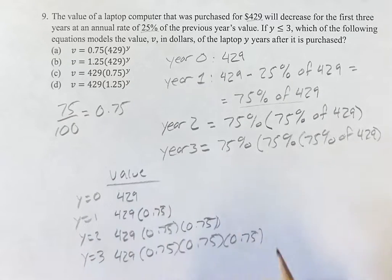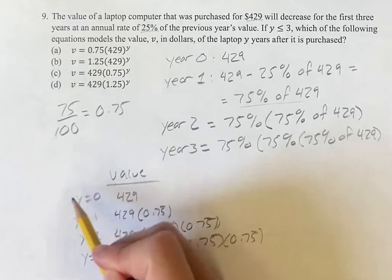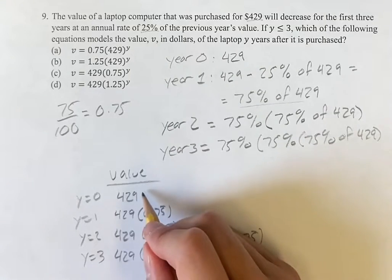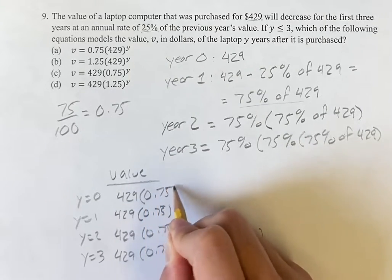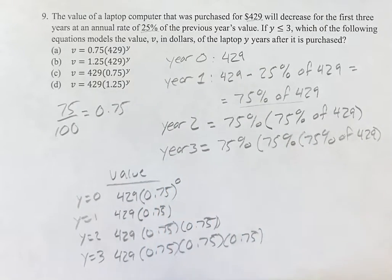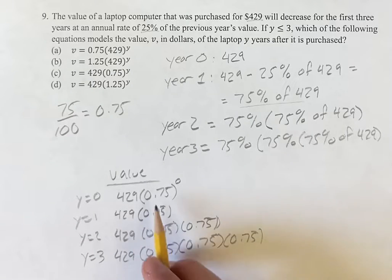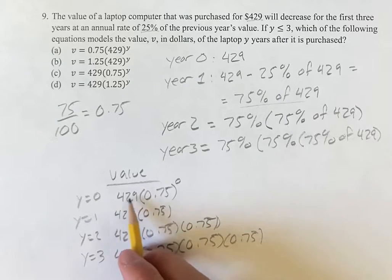So how do we get this into a single form where we're going to have the same thing every time except y is just going to be changing? Well, if you think of this as 0.75 to the 0 times 429, because 0.75 to the 0 is just 1, which means this is just going to be 429.